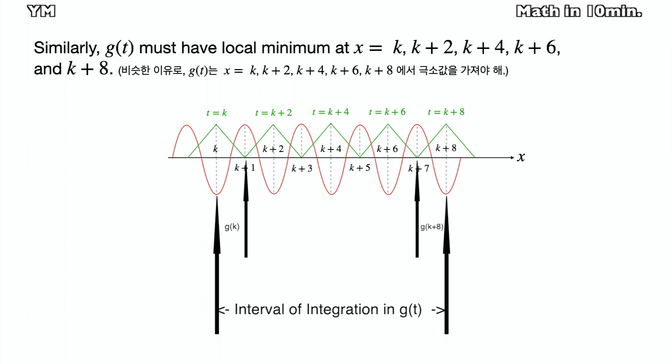And g k plus 8 is integrated from k plus 7 to k plus 8, while g k plus 2 is integrated from k plus 1 to k plus 3. So gk and g k plus 8 are half of the other local minimum values.